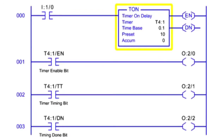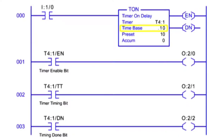The Timer On Delay instruction is used to turn an output on or off after the input has been on for the preset time interval. The timer requires user input data that consists of a preset value and a time base. The time base of the timer instructions is expressed in seconds. Common time base values include 0.01, 0.10, 1.0, and 10 seconds.